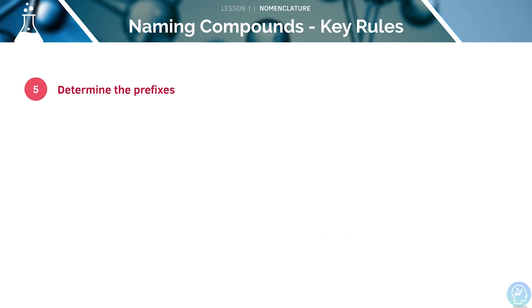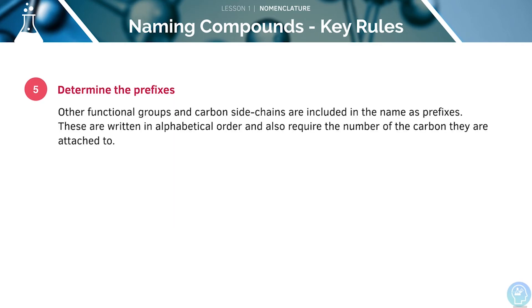Next, let's determine the prefixes. Other functional groups and carbon side chains can be included as prefixes. We'll be writing these in alphabetical order, but we need the number of carbon that they're attached to. Here, we can see that we've included the functional group and the carbon side chains in the name as prefixes.